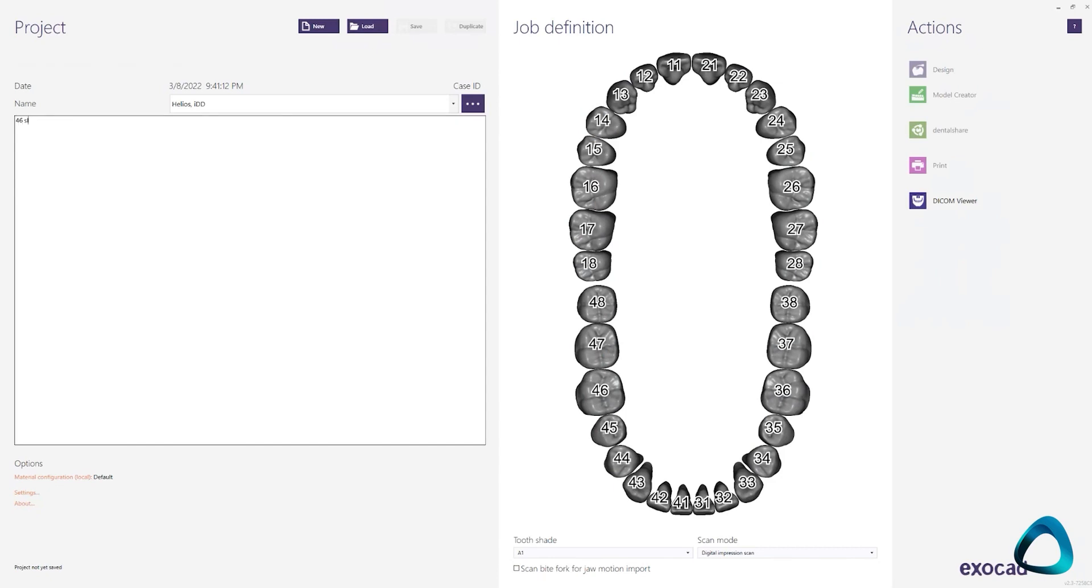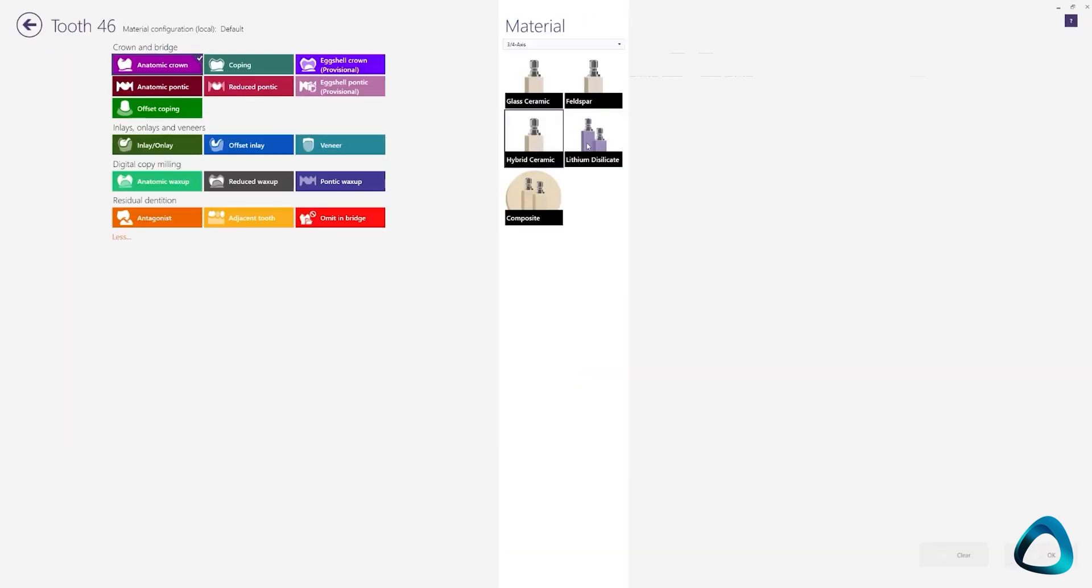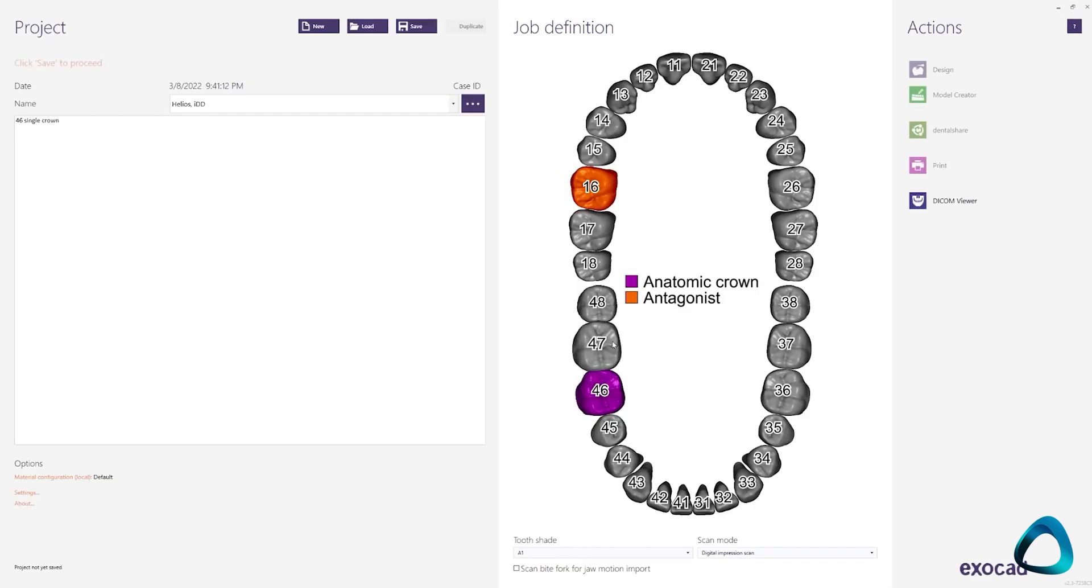Here we have scans taken with a Helios 600 intraoral scanner, and we want to provide a same-day crown to our patient. So we will use Exocad software to design and fabricate the restoration. First is the case setup and indications. This is like your lab form. Fill in all the appropriate patient and case details and then you can move forward with the workflow.